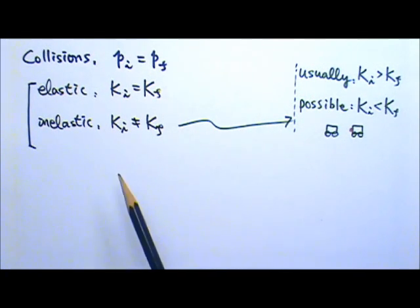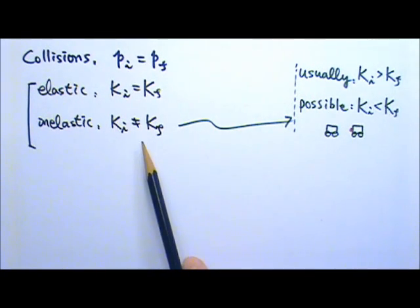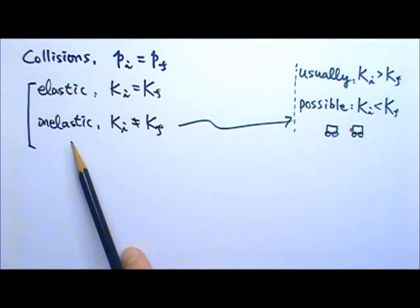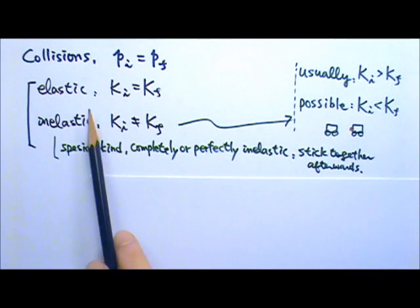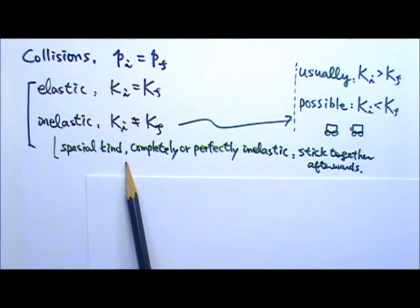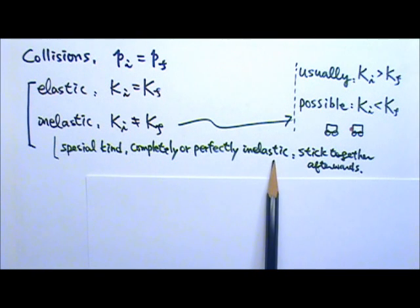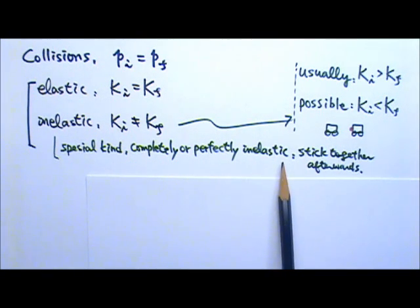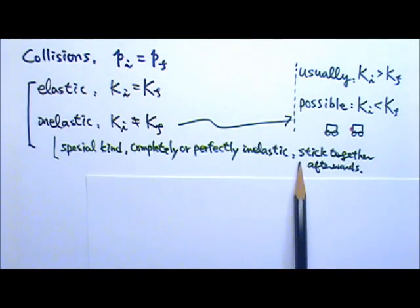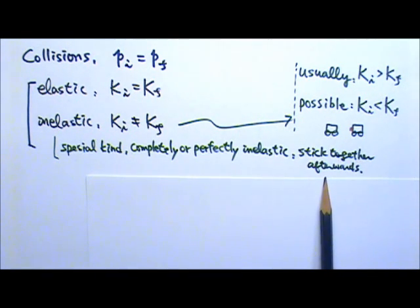Anyway, as long as the system's initial kinetic energy and the final kinetic energy are not equal, it is an inelastic collision. Out of all inelastic collisions, there is a special kind called completely or perfectly inelastic collision. A completely inelastic collision is one that all objects involved stick together and move with the same velocity at the end of the collision.